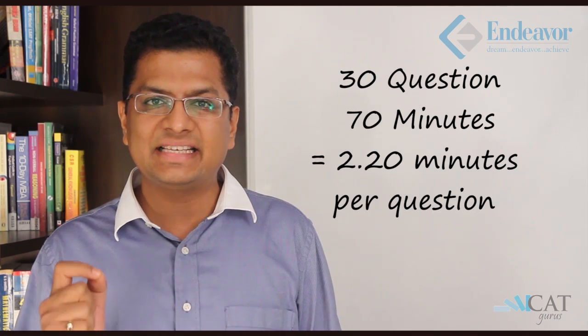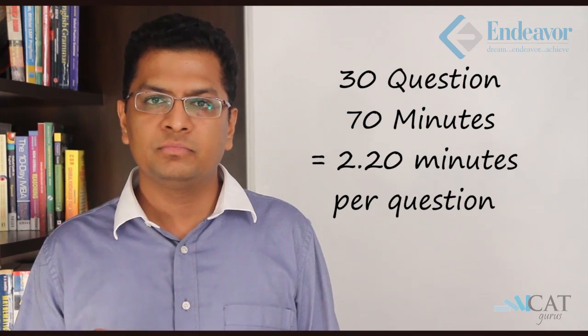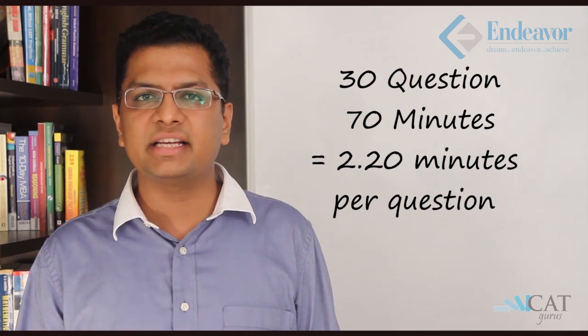Hello and welcome to a session on strategies in the quantitative section. In order to form a strategy, let's first understand the quantitative section. You have 30 questions and 70 minutes to answer them. So on average, 2 minutes 20 seconds per question.